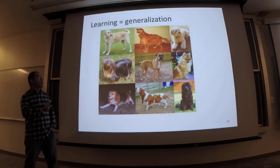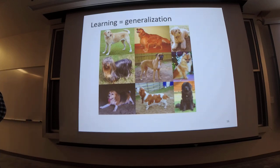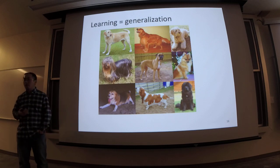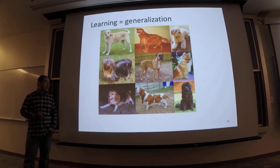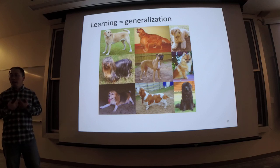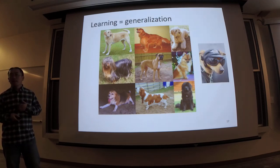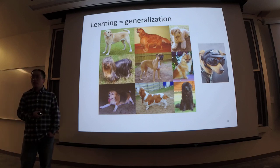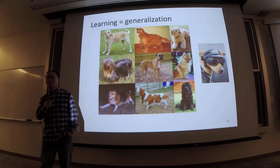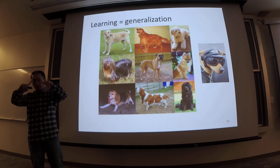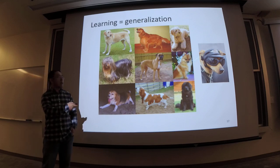From another point of view, learning is essentially a capability to generalize. Suppose your task is to recognize dogs in pictures. You're given a bunch of examples of various dogs. I hope that my machine learning algorithm can recognize a dog it has never seen before — even if it wears a cool pair of glasses, it can still be recognized as a dog and not a cat. That shows that learning is essentially the capability to generalize: from a finite number of examples, capture the essence of the concept and recognize new instances.